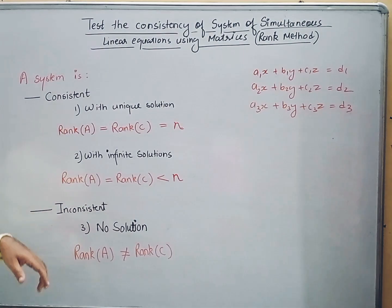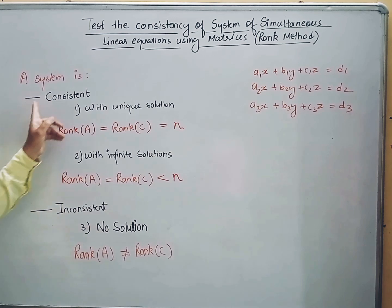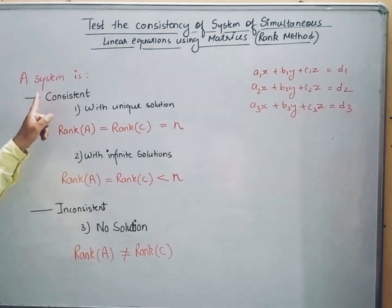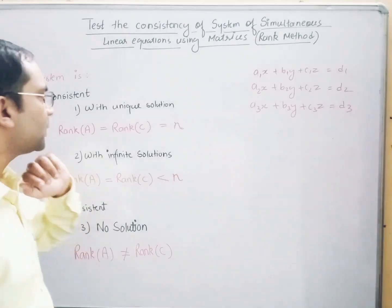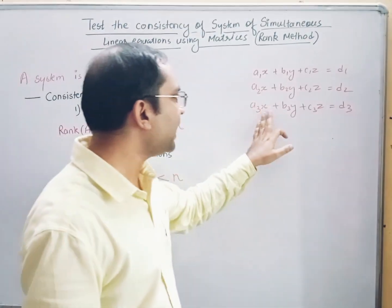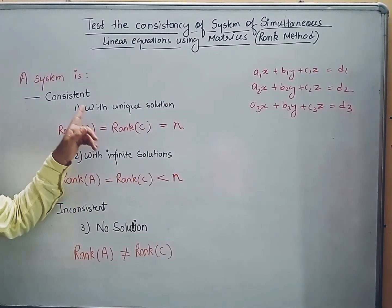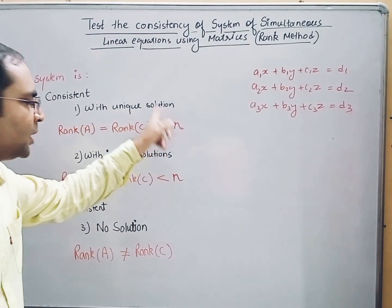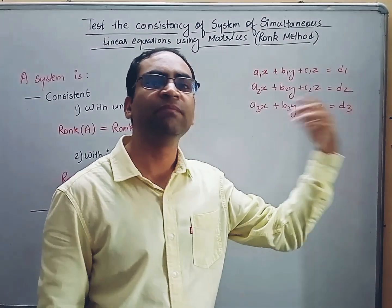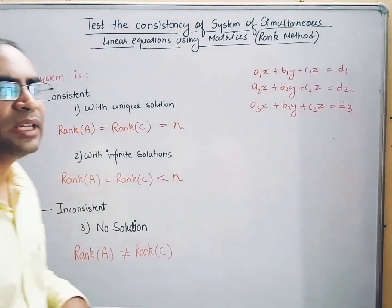Let us see how we can test the consistency. The system can be in two forms: either it could be consistent or the system will be inconsistent. When the system is consistent, it has two options. One, the system is consistent with a unique solution — meaning we will have single values of x, y, and z. Two, the system can be consistent but with infinitely many solutions, meaning x, y, and z can have multiple solutions. The third case is that it is inconsistent whenever the system has no solutions.